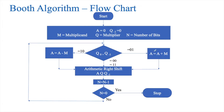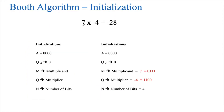If Q0 and Q minus 1 are 0-1, we add the contents of A with M, put the result back in A, then do the arithmetic right shift, reduce N by 1, and check N. If they are 1-0, we subtract M from A, store the result back in A, and redo the same steps. We are going to verify this using Booth's algorithm.